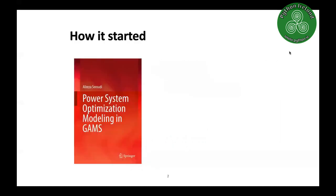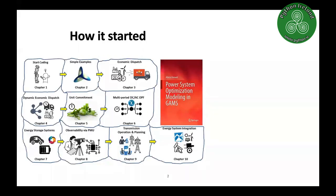In 2017 I was working at EirGrid, and during that period I was writing a book on the application of power optimization methodologies in power systems — my own background. I did my PhD in power system optimization and modeling on distribution networks in France. The book has chapters on economic dispatch, dynamic economic dispatch, unit commitment, power flow, optimal power flow, energy storage, observability, transmission network planning, and energy system integration.